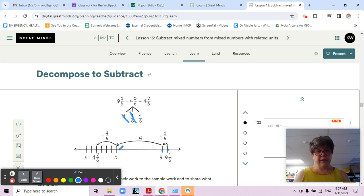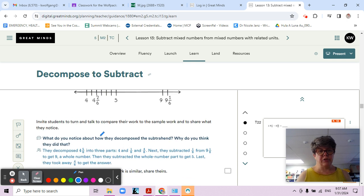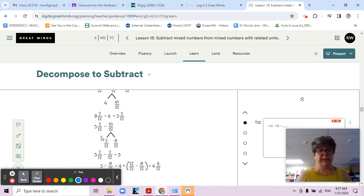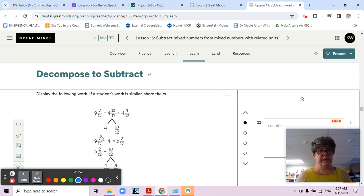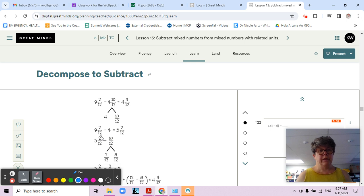I know for some of you you're getting used to thinking backwards, thinking about taking away on that number line and moving backwards. I understand it can be a challenge. Let's see if I have one more way to show this to you. So nine and two twelfths minus ten twelfths - not quite our original problem.